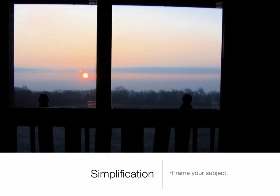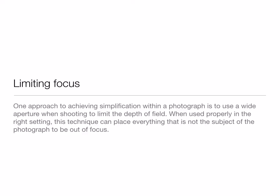The banister creates a lot of lines framing different sections of the photo. On the other hand, this isn't the best photo — a zoom in on the left side only would be stronger, but it's still an interesting element. This is limiting focus, meaning one approach to simplification within a photograph is to use a wide aperture when shooting to limit the depth of field. Things closer to the camera are going to be in focus while everything farther away from the subject will be out of focus.